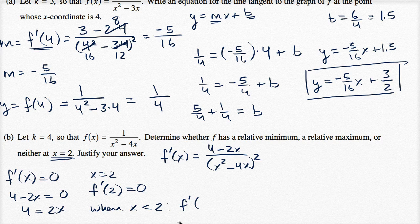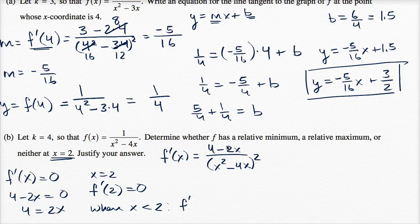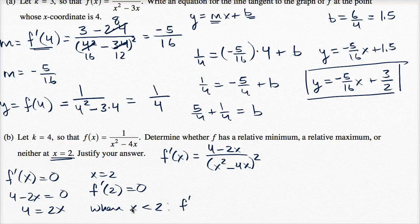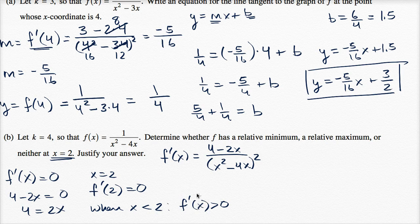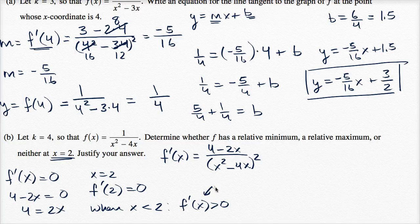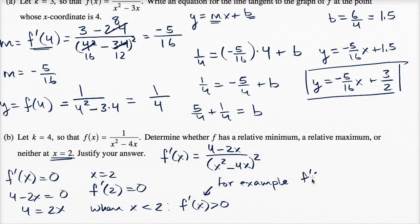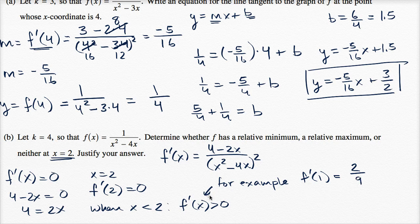If x is less than two, you actually don't even have to test f prime of one, but you could if you want. You would have four minus two times one, so that's going to be positive. And then this down here is always going to be non-negative because you have a squared. So when x is less than two, f prime of x is greater than zero. For example, f prime of one is equal to four minus two, which is two, over one minus four squared, which is two ninths.